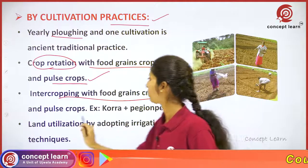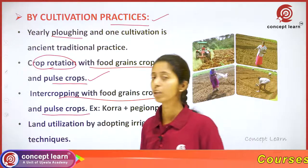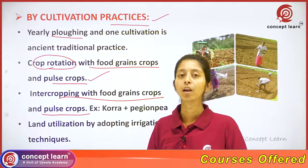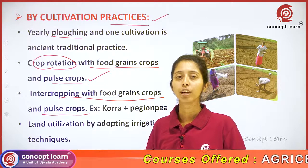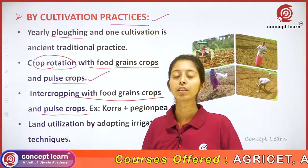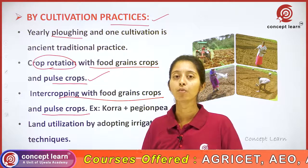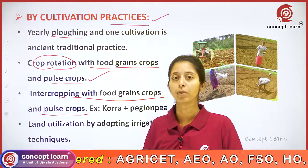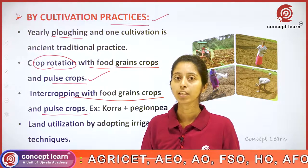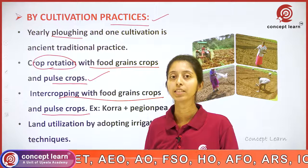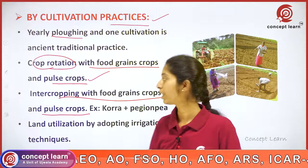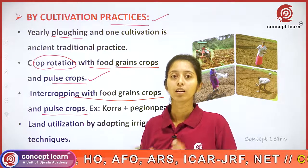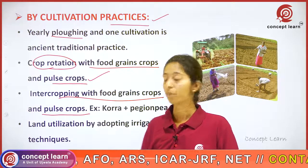Intercropping with food grain crops and pulse crops is another practice. If you go for mono cropping, the nutrient loss will be more from the soil. If you go for intercropping — cereals intercropped with pulses — it results in less use of nutrients by the pulse crop.